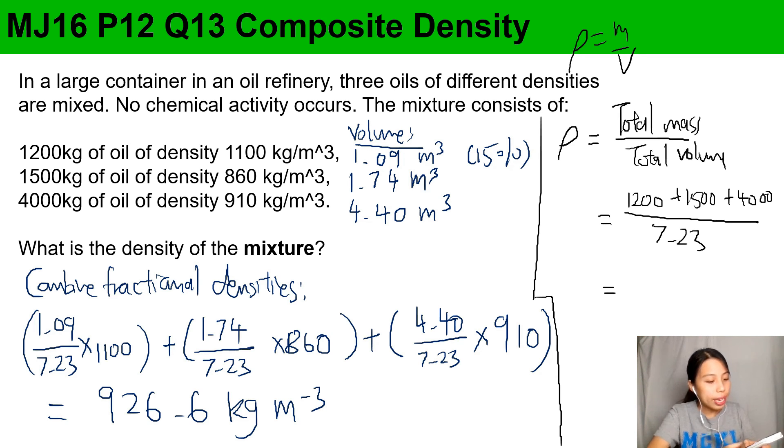So 1200 + 1500 + 4000 divided by 7.23, I get about 926.7. Maybe the earlier one I didn't write so it's a little bit different - ideally you keep all your decimals but I rounded off to two decimal places. In the answer I should choose 927 because it's rounded to three significant figures. So just remember: when there's composite, you want to be either thinking about how you can combine each fractional density, or you want to think of total mass, total volume.